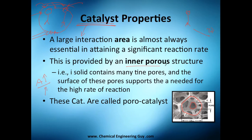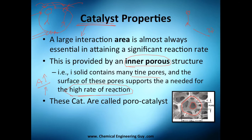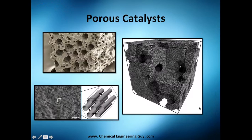This large area is generally achieved by porous materials or porous structures. The solid contains many tiny pores, and the surface of these pores supports the high rate of reaction needed. If you go to the microscopic level, you can see that each pore gives you a lot more space. In this microscopic photograph, imagine you are a molecule — you can go into this duct, or this pipeline, or this one. You have huge spaces available.